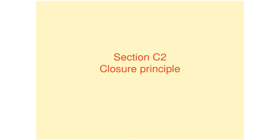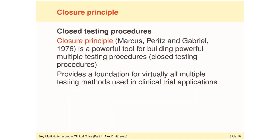Section C2: Closure principle. Having defined two basic multiplicity adjustment methods — the Bonferroni and the Symes — we are now ready to begin building efficient multiple testing procedures. To accomplish this, we will need the closure principle. This principle has served as the main tool for constructing powerful procedures. In fact, it is known that any single-step or stepwise procedure based on p-values can be formulated as a closed testing procedure, and as a result, we can always construct a closed testing procedure which is at least as powerful as any single-step or stepwise procedure.